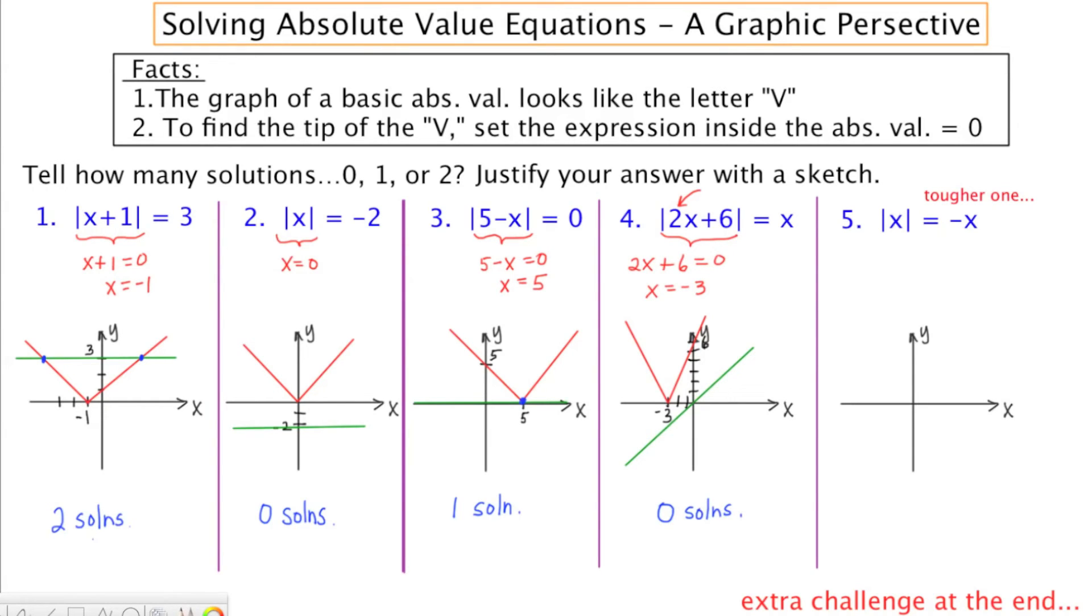Example five is a tougher question. It's got an interesting outcome. The left-hand side is going to be a V whose tip is at zero, and the slope of each arm is going to be 1 and negative 1.